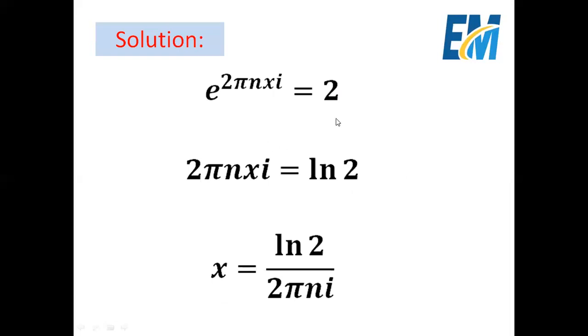Here we will apply the natural logarithm for both sides. So ln and e will cancel each other and we will get 2πnxi equals ln 2. Then x will be ln 2 all over 2πni.